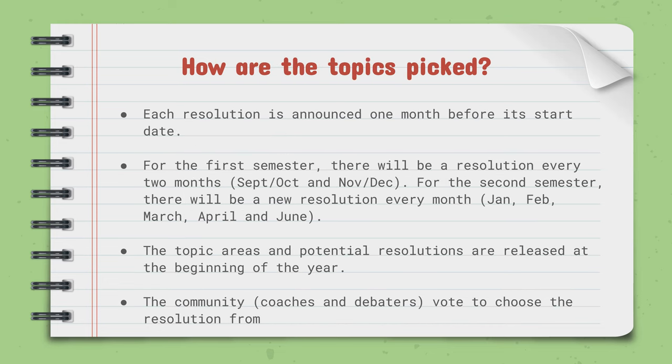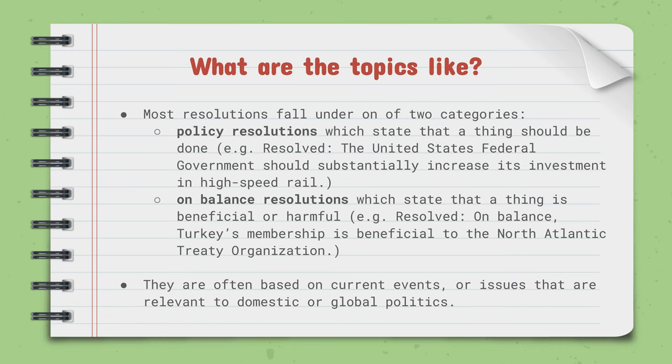All resolutions are announced one month before their start date. Generally they're one month long, with the exception of the first two topics of the semester: September-October and November-December. For the second semester, there's a new topic every month. At the beginning of the year you know the topic areas, and there are usually two potential resolutions that get voted on later. For example, a recent topic area was sustainable infrastructure — one option was high-speed rail, the other was rare earth minerals, and the community voted for high-speed rail.